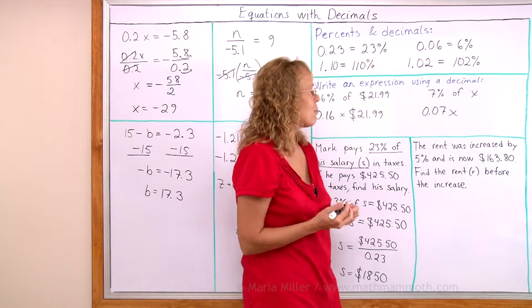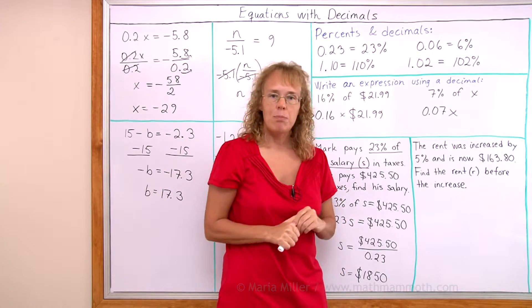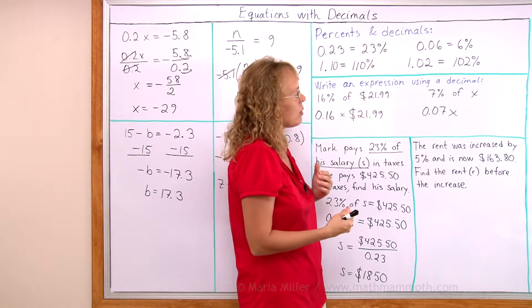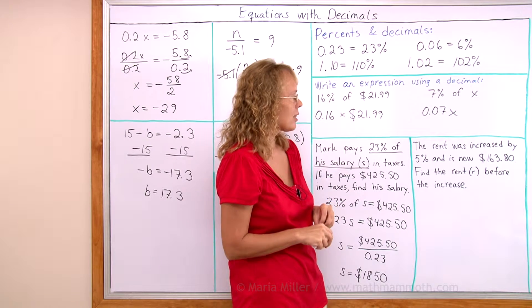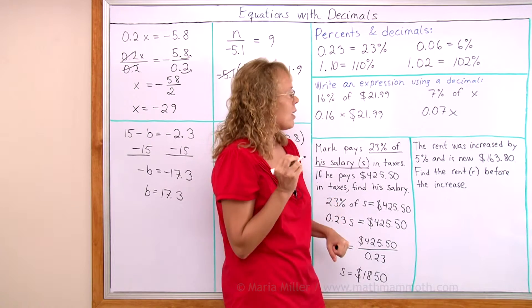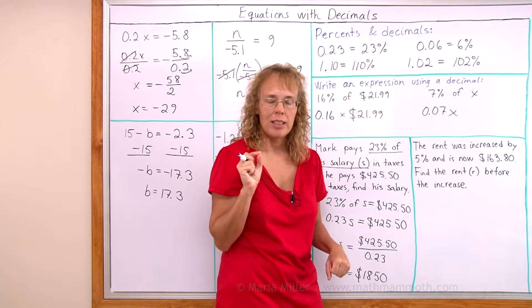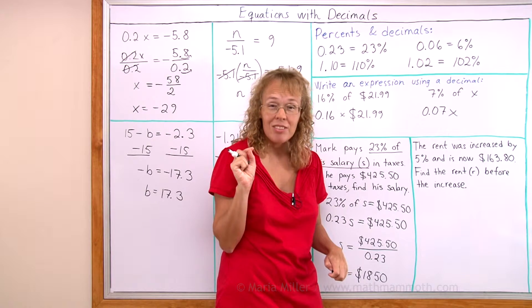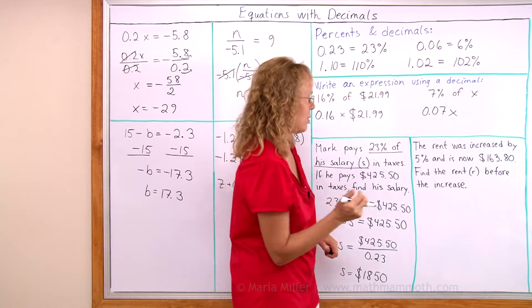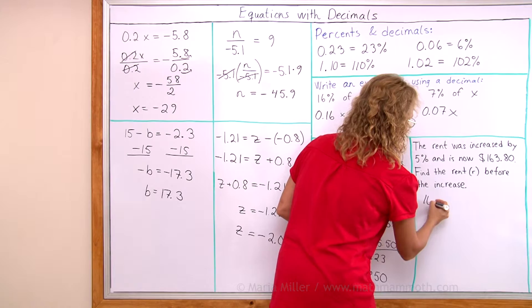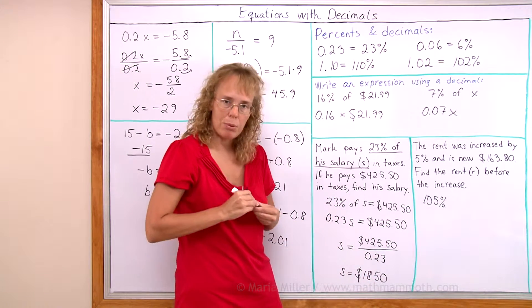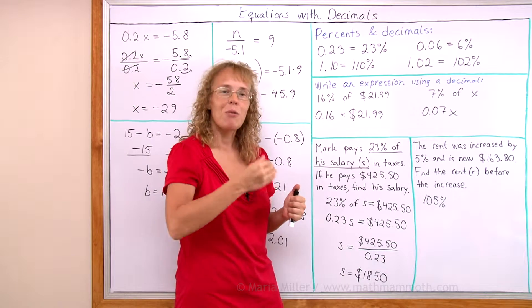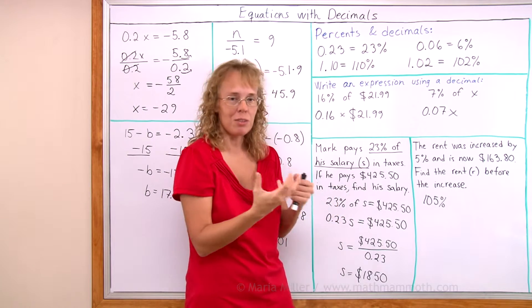Another very similar example. The rent was increased by 5% and it is now $163.80. Find the rent before the increase. When the rent is increased by 5%, it becomes 105% of the original. An increase of 5% means that we take 105% of what it was.